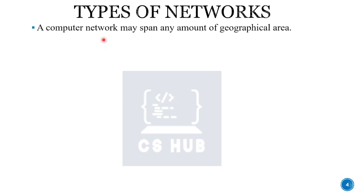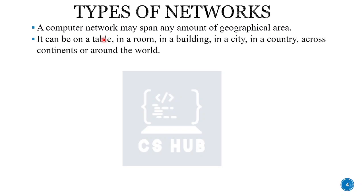A computer network may span any geographic area. A network is a system — not a single device. If we have a printer or a scanner connected, it becomes a network. With Wi-Fi, mobile, or Bluetooth, we have a network. The internet is also a network, spanning from a table, room, or building all the way to a city, country, continent, or around the globe.